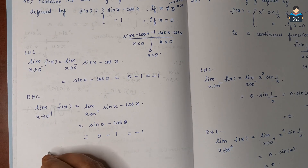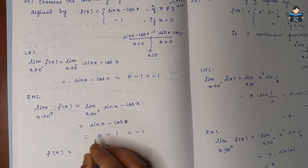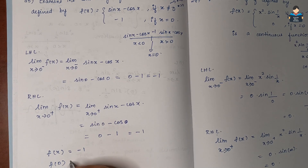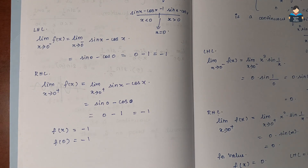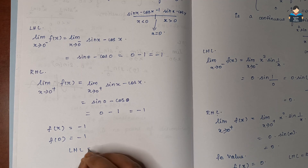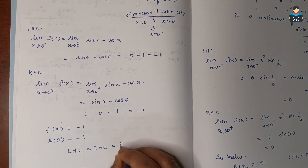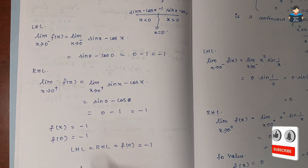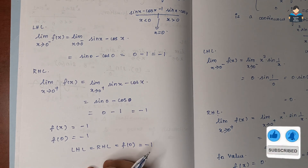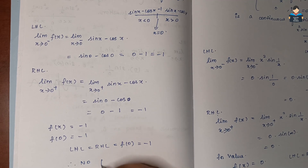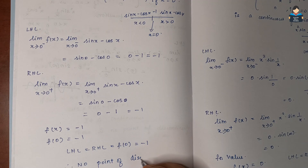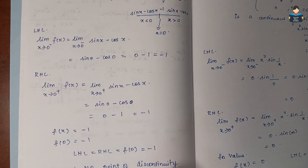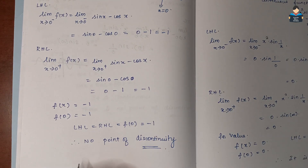The function value: f(0) = −1, as given. So LHL = RHL = f(0) = −1. All three are equal, so there is no point of discontinuity. Therefore, it is a continuous function.